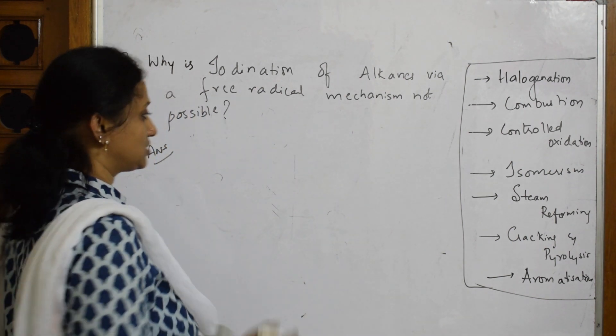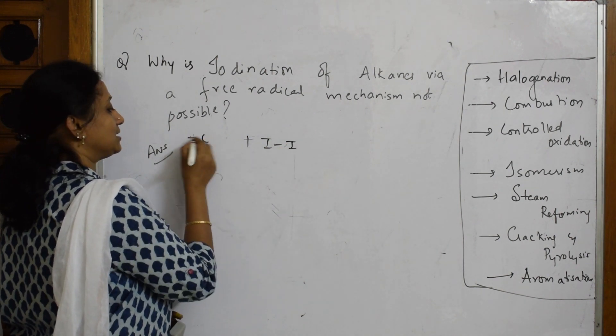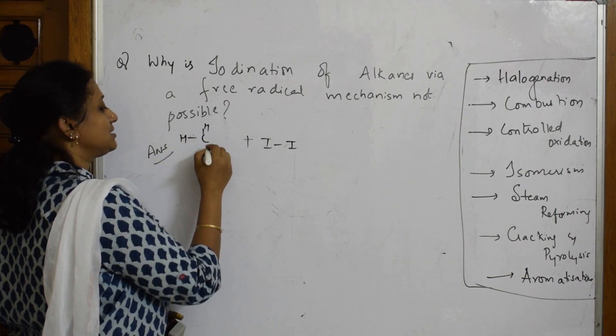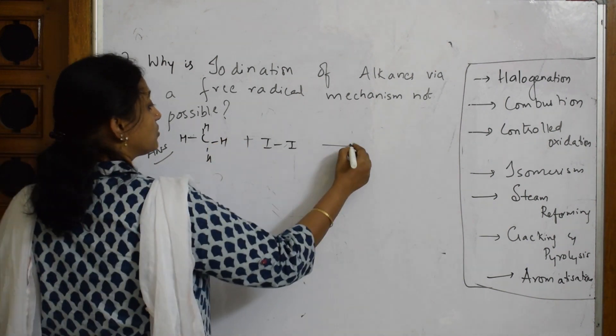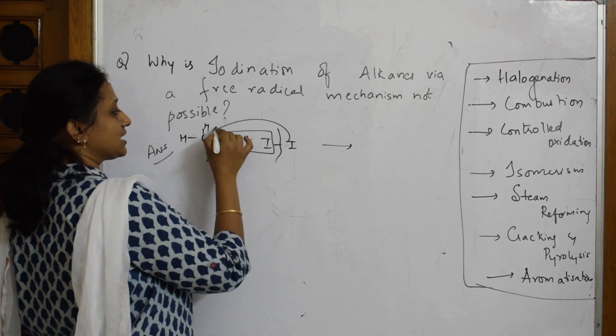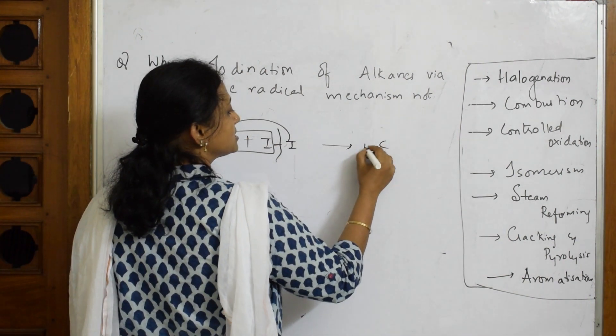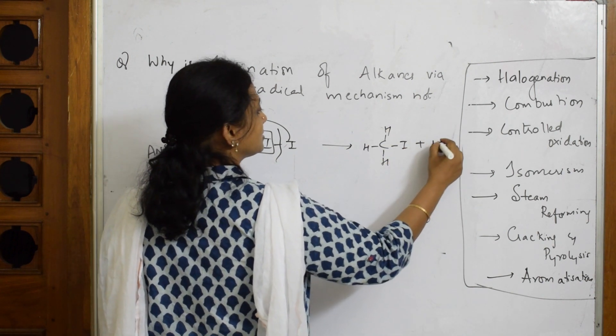When I have to speak about iodination reaction, that means addition of iodine to alkane - I'm taking an alkane like CH4. What will happen in this reaction? There's a cleavage of the bond, HI comes out and this I comes in. This will become CH3I plus HI.